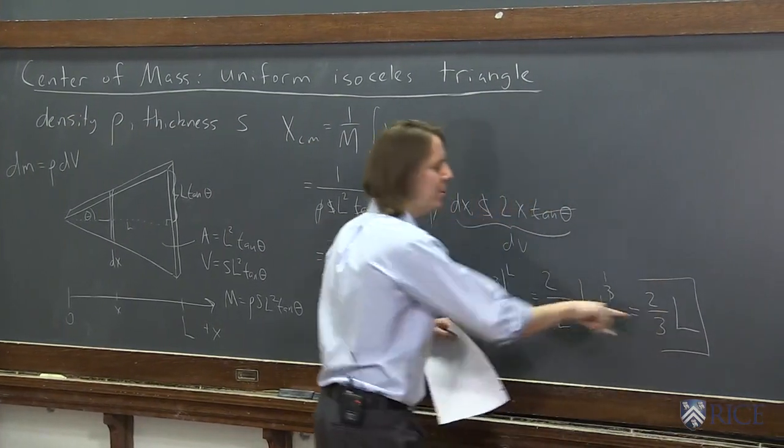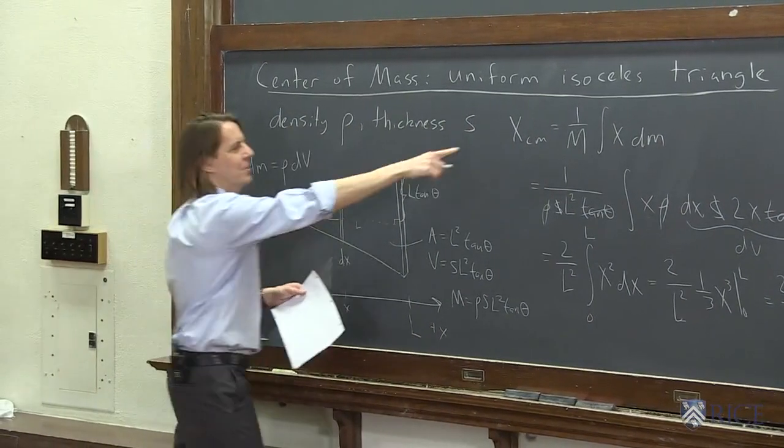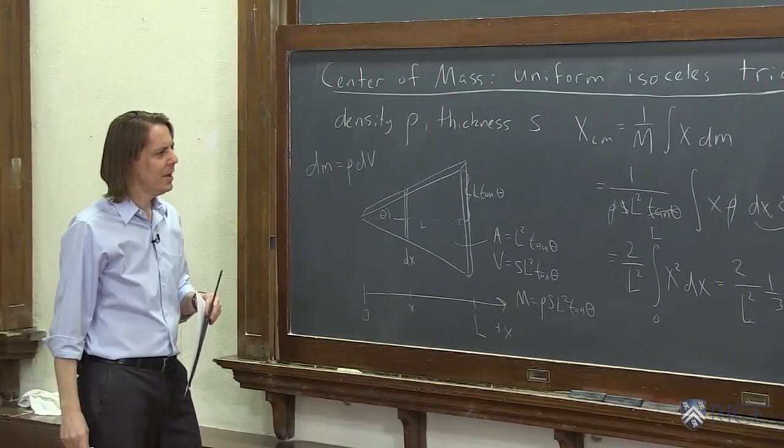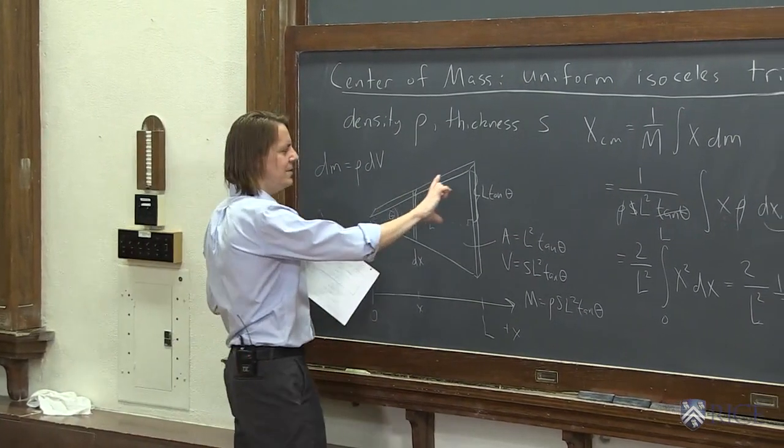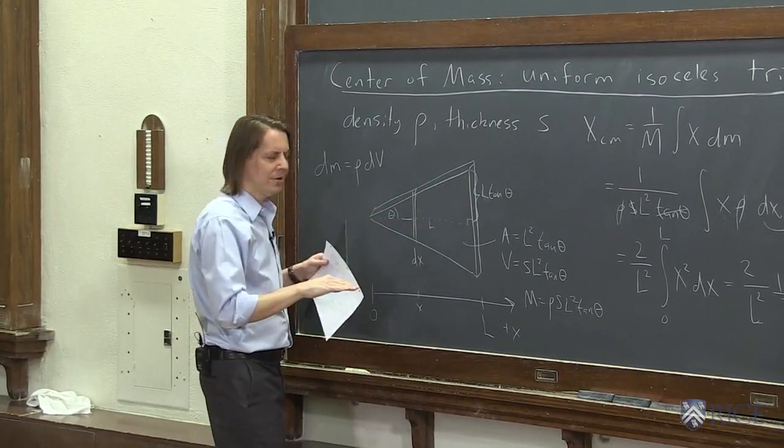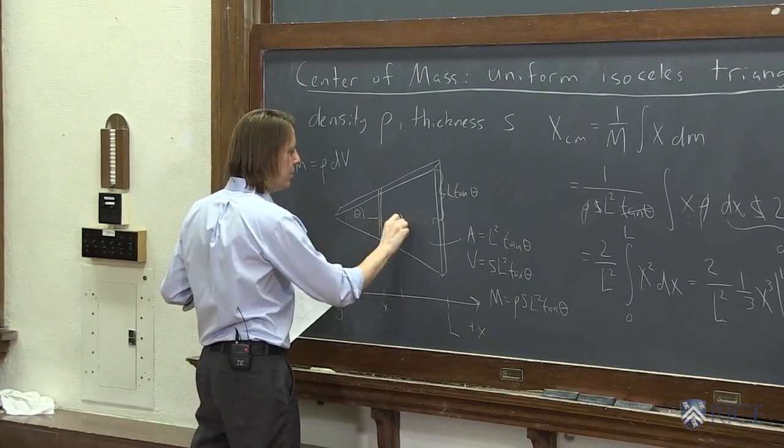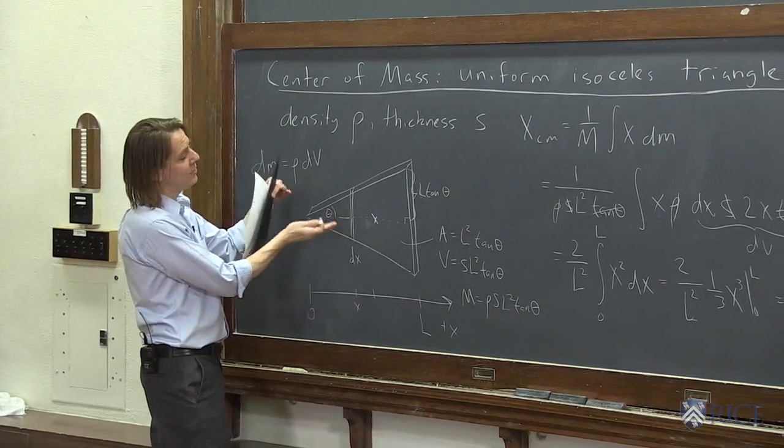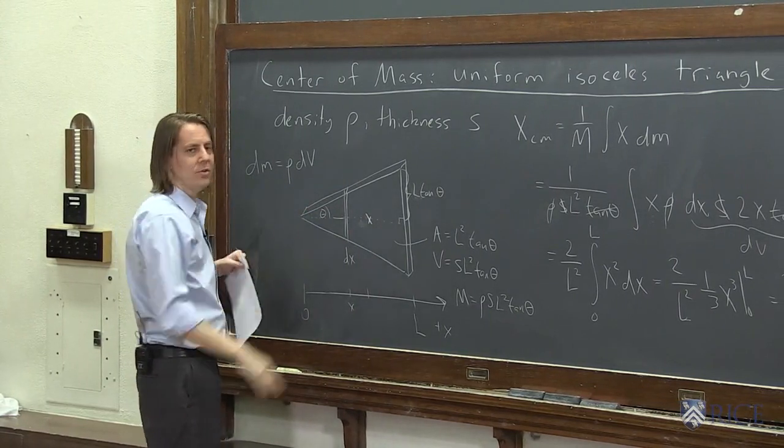So one way to check your work is you better get something that is just a dimension of a length. Because we're asking for a position. If you end up with L squared or L to the fifth, you've done something wrong. So this says that the center of mass of this isosceles triangle with a little bit of depth to it to give it some mass is always 2 thirds about right here. 2 thirds of L. No matter what the angle it opens is, okay, I guess I could believe that. But no matter what the thickness of the density is, it's always 2 thirds of L.